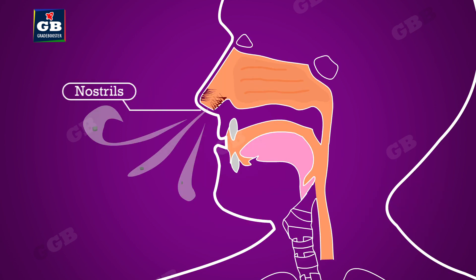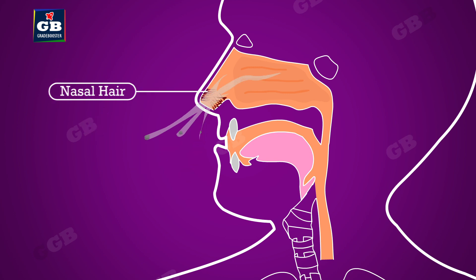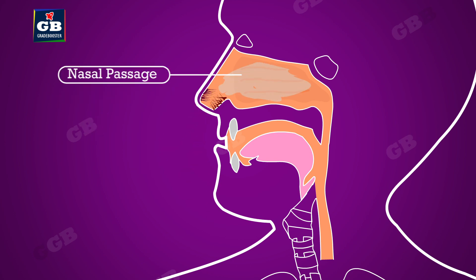The human respiratory system begins with a pair of nostrils through which air enters our body. Nostrils are lined by fine hairs to filter the dust that enters in. Nostrils lead to the nasal passage, which is wet to humidify the air.